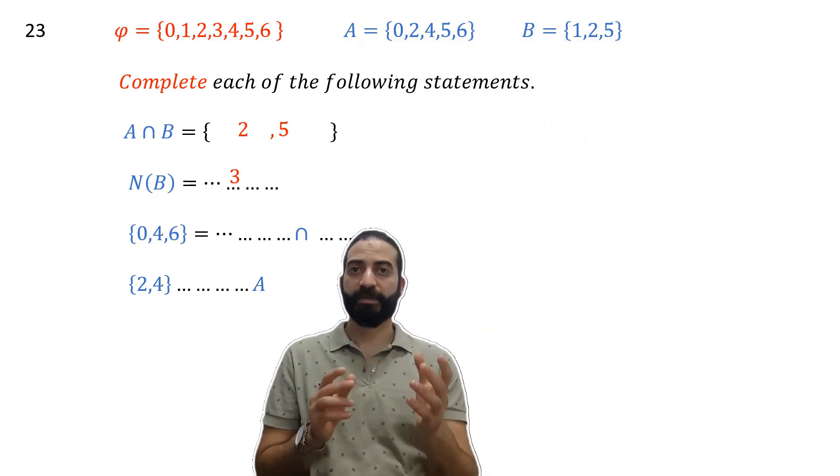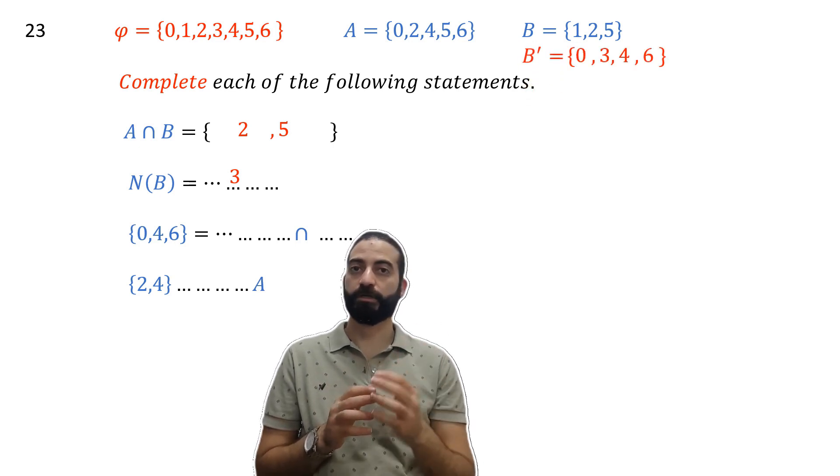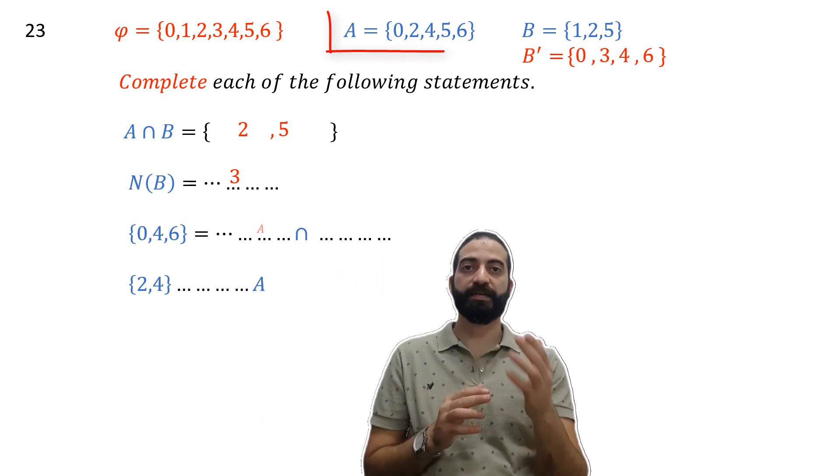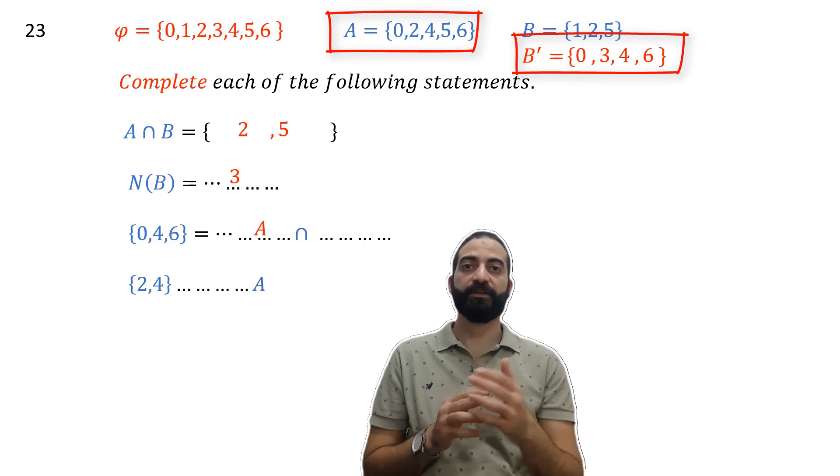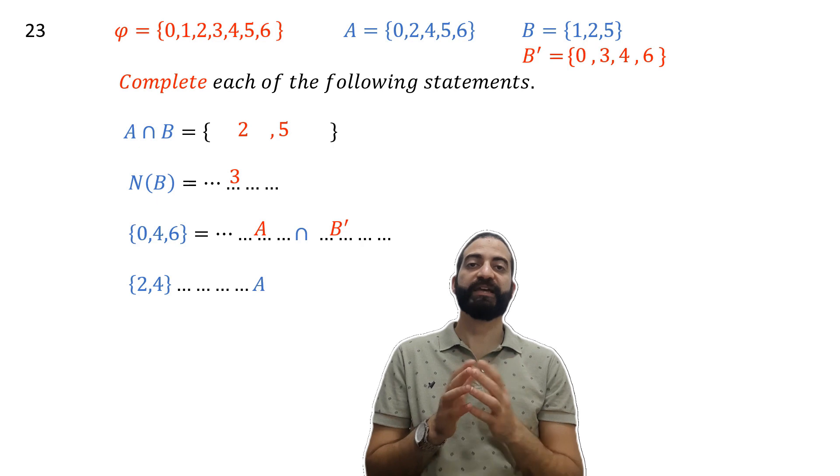The complement of B is B' = {0, 3, 4, 6}, and the intersection between A and the complement of B is {0, 4, 6}. So A ∩ B' = {0, 4, 6}. In this way we have got the answer.